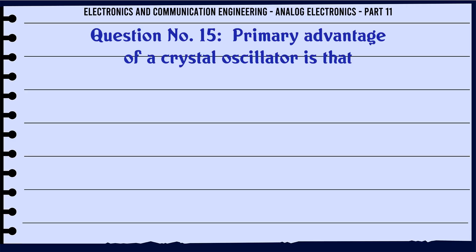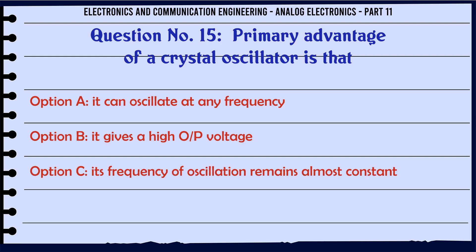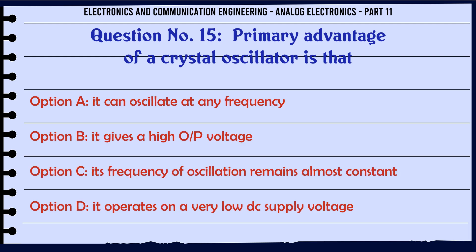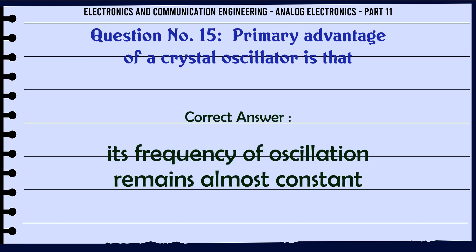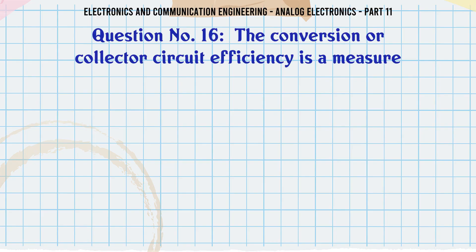Primary advantage of a crystal oscillator is that. A. It can oscillate at any frequency. B. It gives a high output voltage. C. Its frequency of oscillation remains almost constant. D. It operates on a very low DC supply voltage. The correct answer is: Its frequency of oscillation remains almost constant.